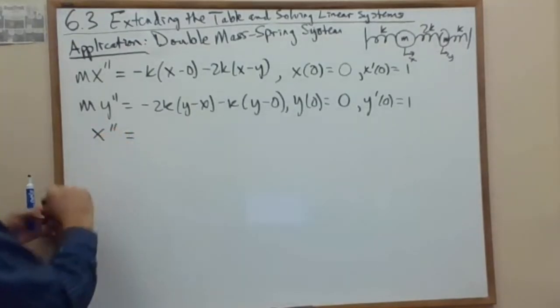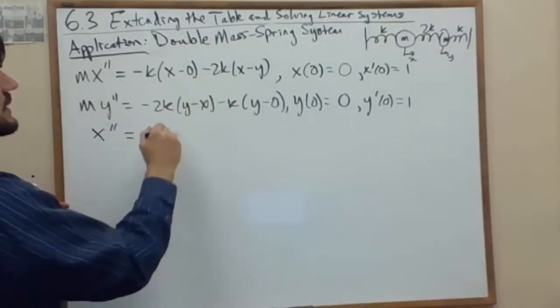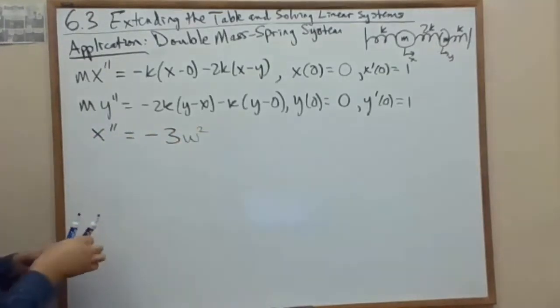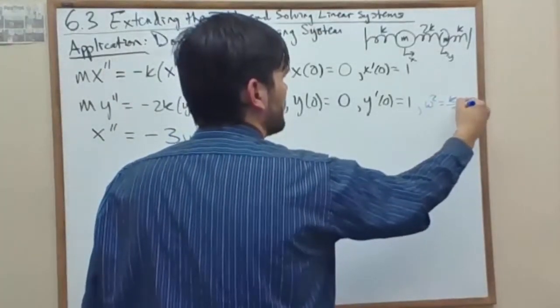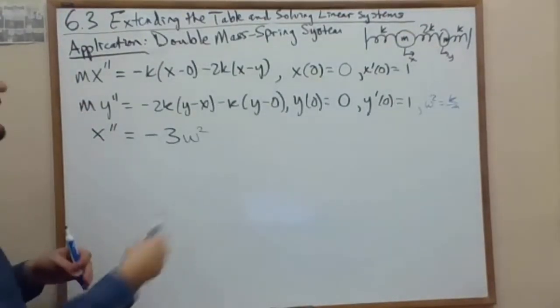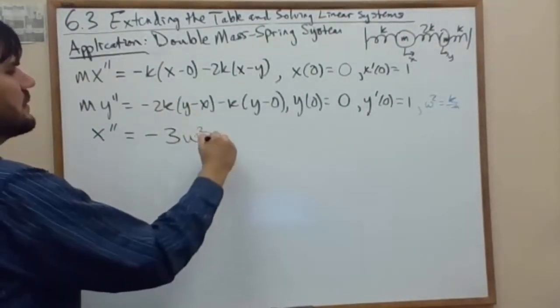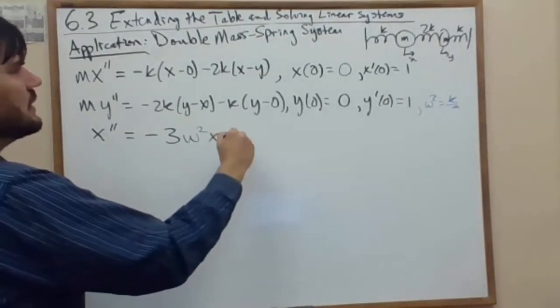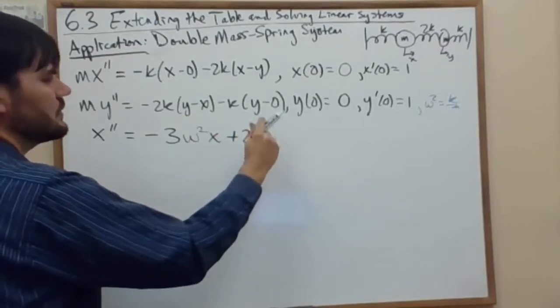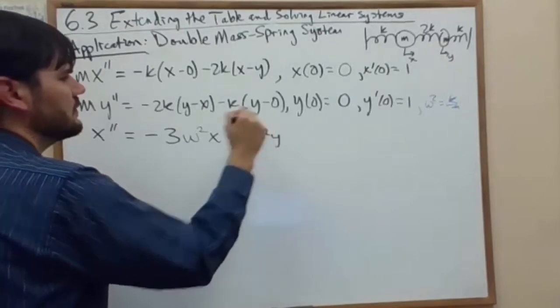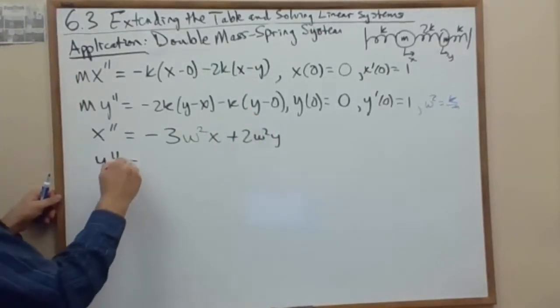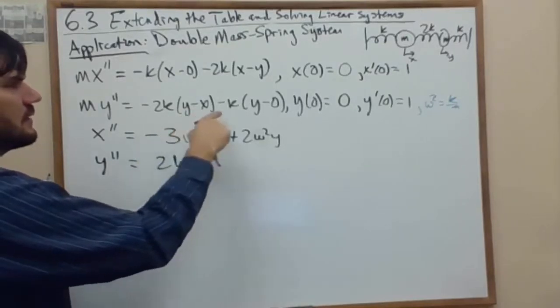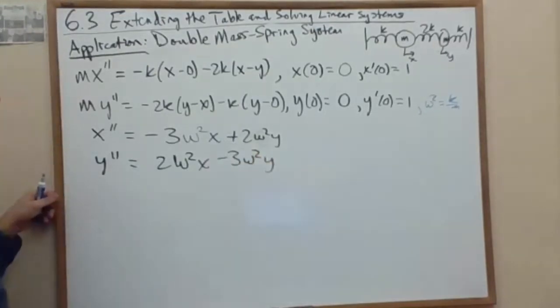x double prime equals minus 3, we'll treat K over M as omega squared. So x double prime equals minus 2 omega squared x plus 2 omega squared y. y double prime equals 2 omega squared x minus 3 omega squared y. Okay, so a nice symmetry here.